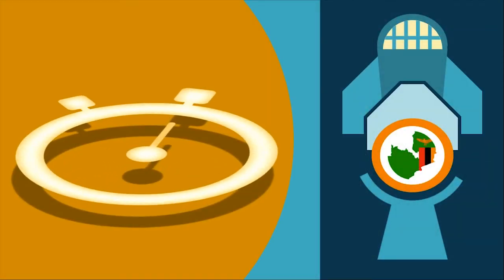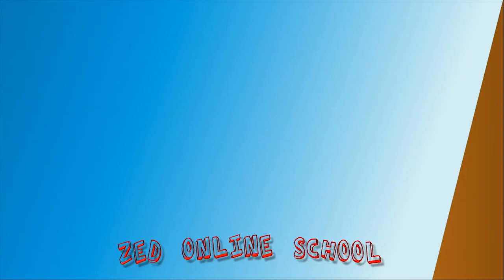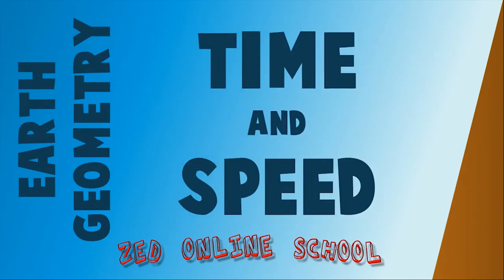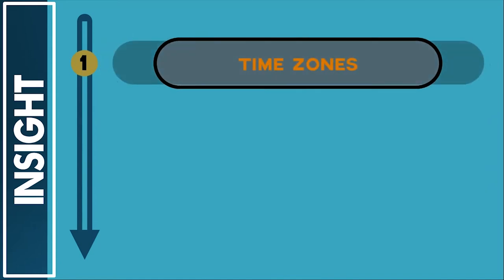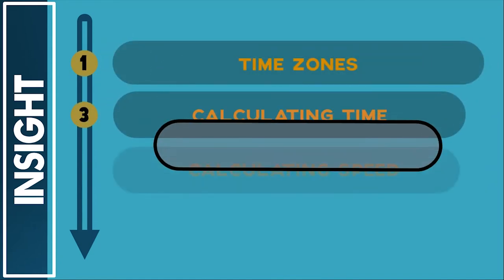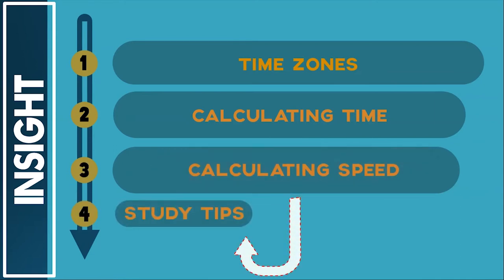Hi there. What makes two places have different time at the same moment? For example, in Ghana it might be 16 hours while in Germany it's 18 hours. What causes this time difference? This is Ed Online School, and in this lesson we'll be looking at time and speed in earth geometry. By the end of this lesson you should be able to know what time zones are, how to calculate time, how to calculate speed, and some study tips for handling time and speed in earth geometry.